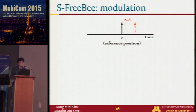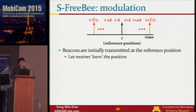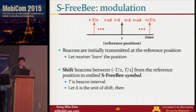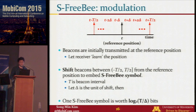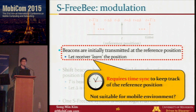Let's start from the modulator. We introduce two versions of Freebie: S-FreeBee and A-FreeBee, starting with S-FreeBee, which is the simpler version. In S-FreeBee, beacons are initially transmitted at a reference position T, and we let receivers learn this position. We then shift beacons between -T/2 to +T/2 from the reference position to embed a symbol, where T is the beacon interval. If delta is the unit of shift, one symbol encodes log(T/delta) bits. However, this version requires time synchronization to track the reference position, which may not be suitable for mobile environments.